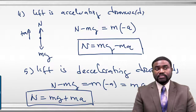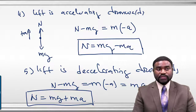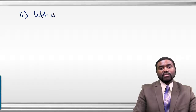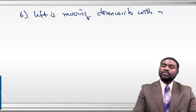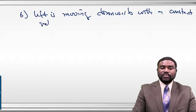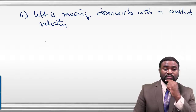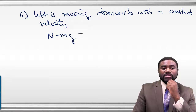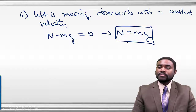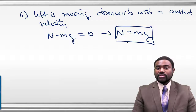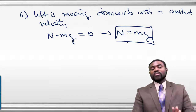When decelerating downwards, the sign of your velocity is negative but your acceleration is positive. Case six: the lift is moving downwards with a constant velocity. In this case, N minus MG equals zero, which means N equals MG. The weight you measure is your actual weight.